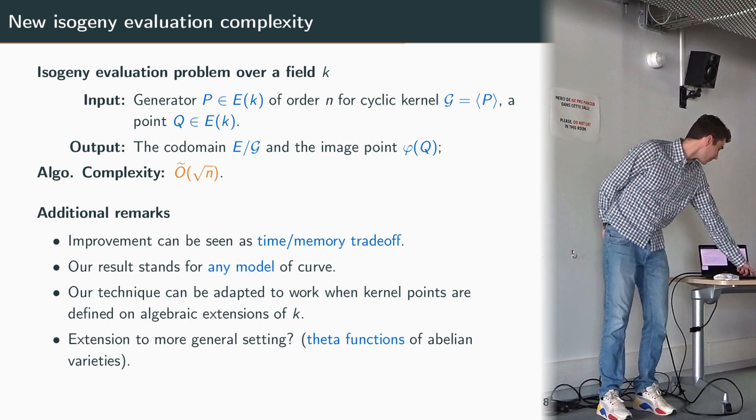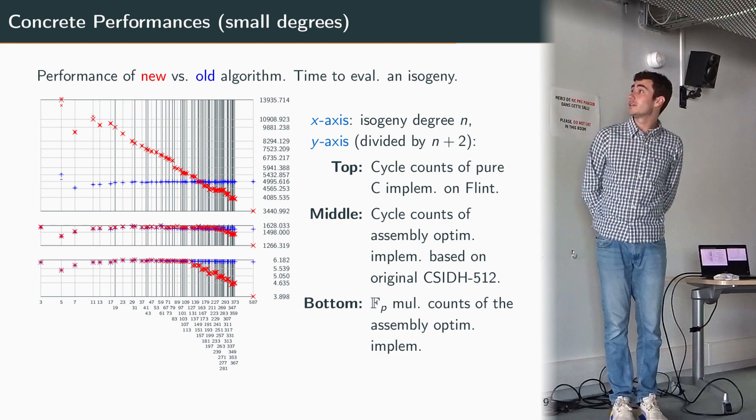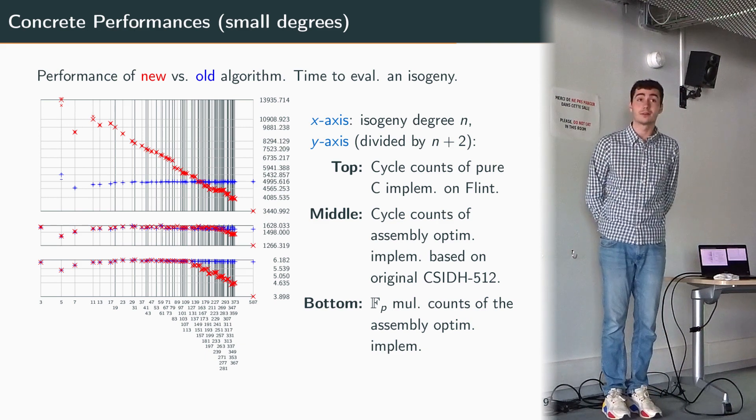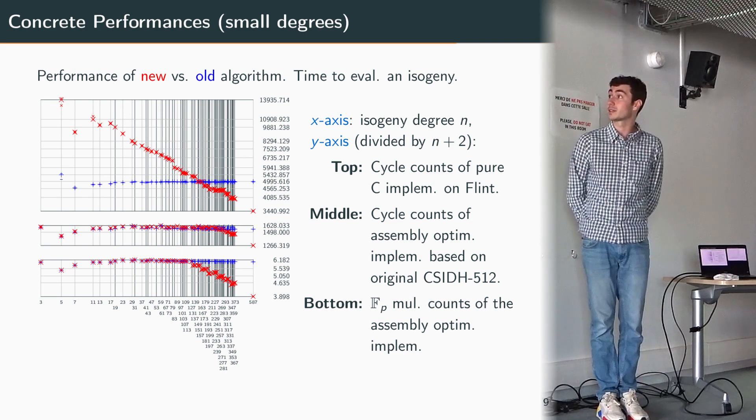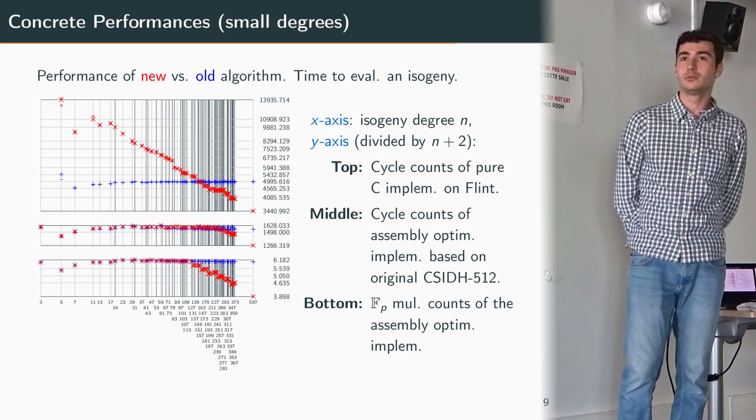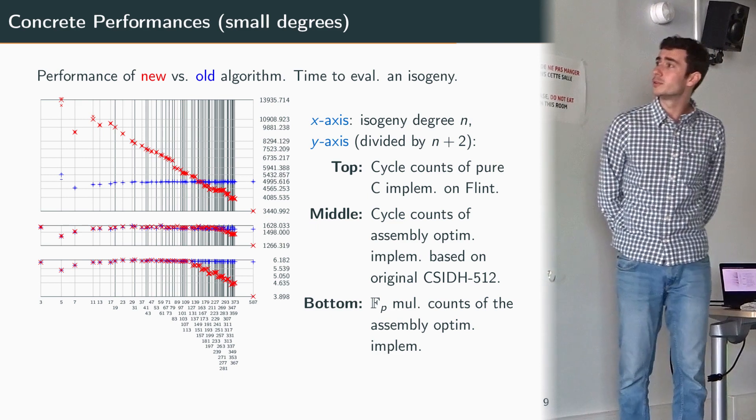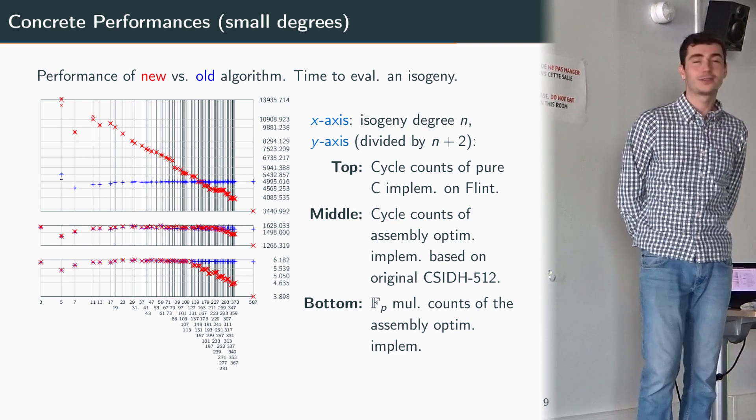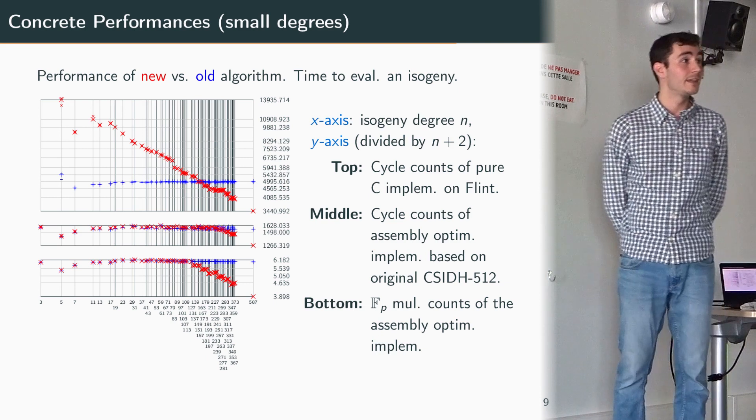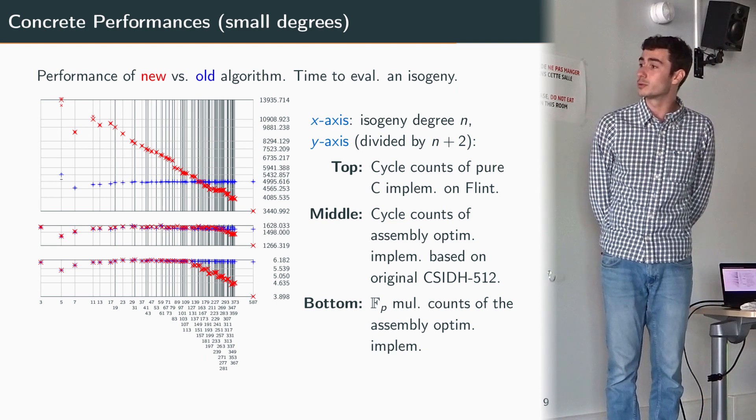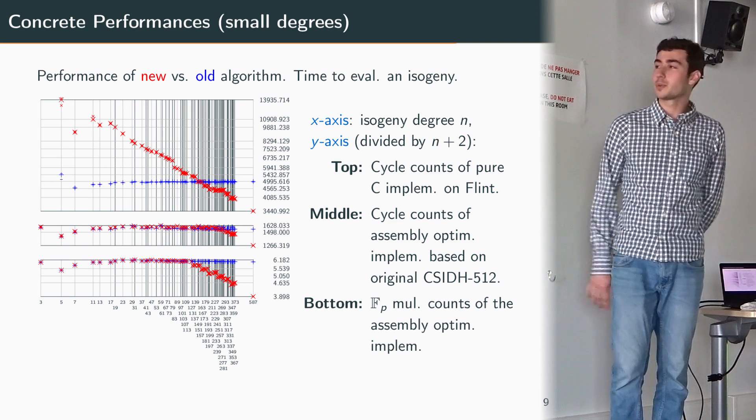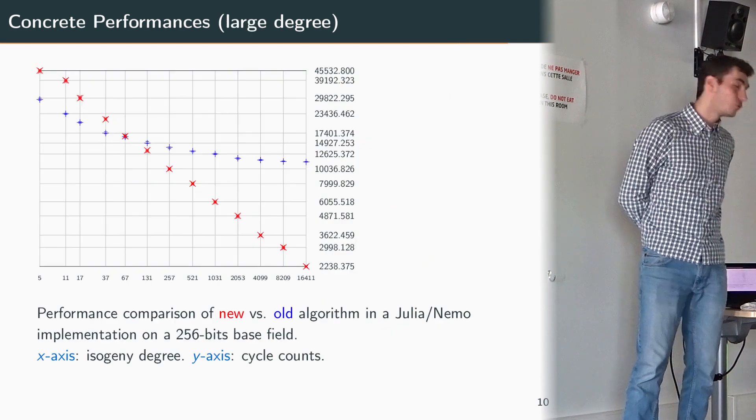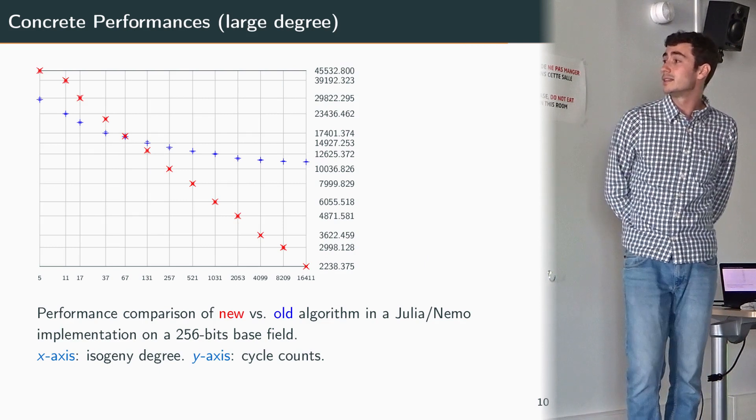I'd like to talk a bit about some performance considerations, because all that I said is very sound but theoretical and we want to assess what kind of improvement we have in practice. So we've made several implementations to assess the improvement. Here you see some experiments about small degrees and what you can remember from this slide is that at some point the red dots go below the blue ones and this means that our new method is already more efficient for small degrees. I don't know if you can read it but the crosspoint is around degrees equal to 100 something like that.